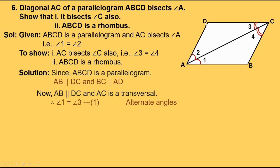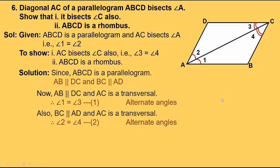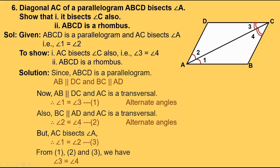Also, BC is parallel to AD and AC is the transversal. Therefore angle 2 equals angle 4 — alternate angles are equal. Let's take that as equation 2. But AC bisects angle A, therefore angle 1 equals angle 2 — let's take that as equation 3. Now, angle 1 equals angle 3 and angle 1 equals angle 2, and angle 2 equals angle 4. So we can say angle 3 equals angle 4. From equations 1, 2, and 3, we have angle 3 equals angle 4. This implies AC bisects angle C. So we proved the first part.